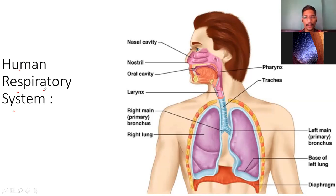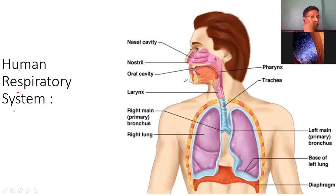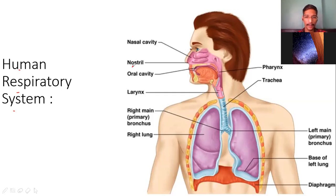Let me introduce you one by one to each organ. The first thing is the nostril — the anulom vilom breathing thing — that is the nostril. When we inhale, air passes from the nostril to the nasal cavity. The nasal cavity has small extensions of bones.